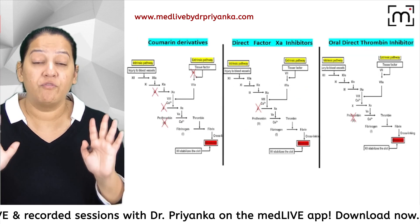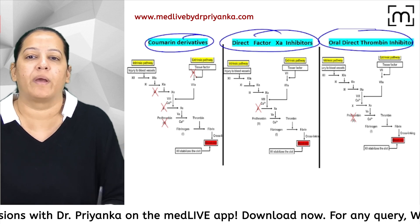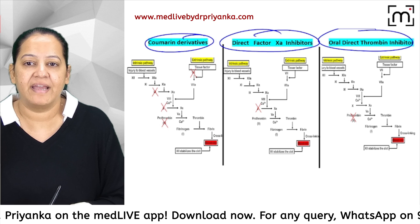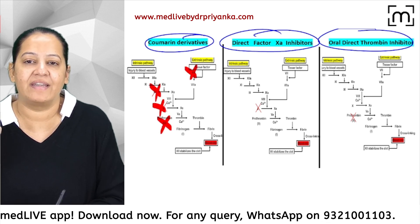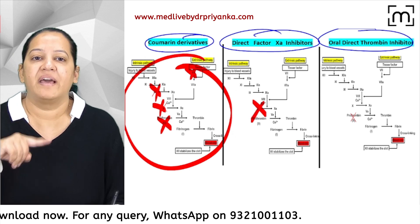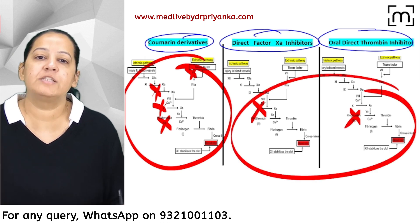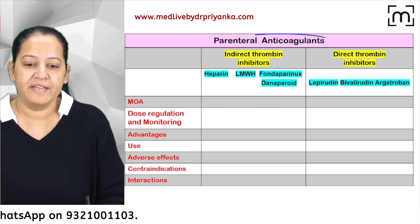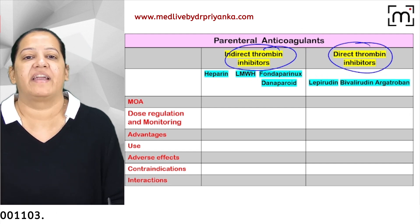To summarize oral anticoagulants: coumarin inhibits four factors — 2, 7, 9, 10 — indirectly via vitamin K. The direct factor Xa inhibitor inhibits factor 10 directly, and the direct factor 2a inhibitor inhibits factor 2 directly. These latter two act directly, without vitamin K involvement.